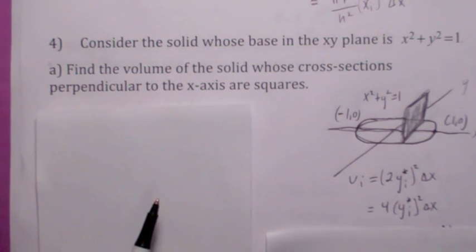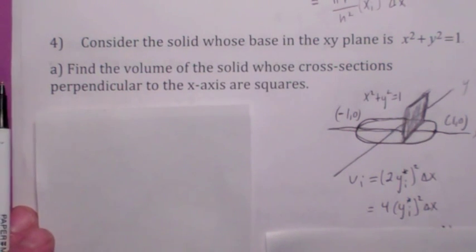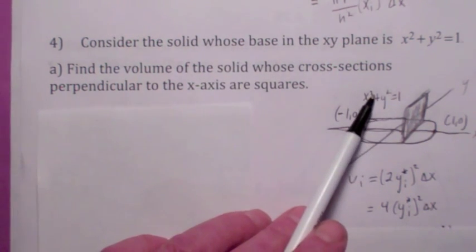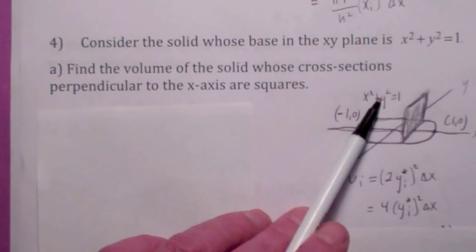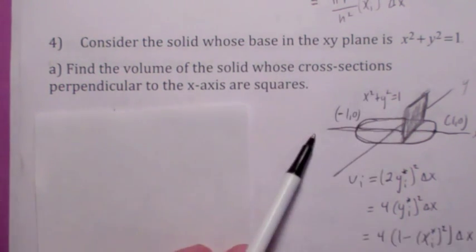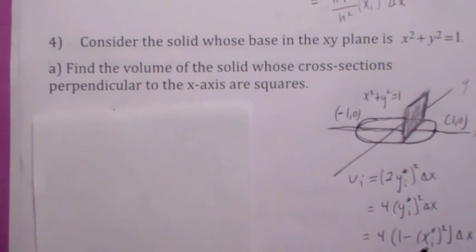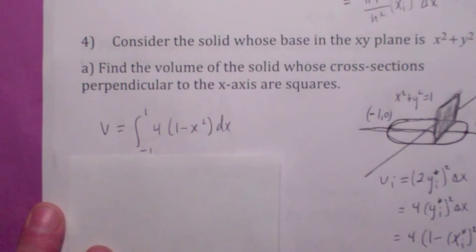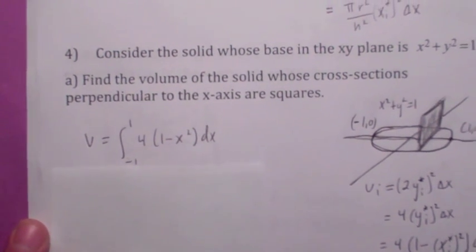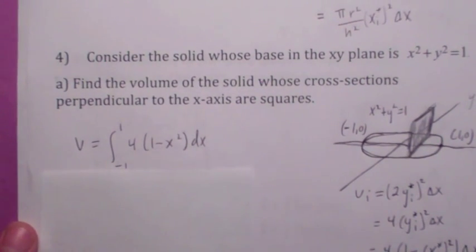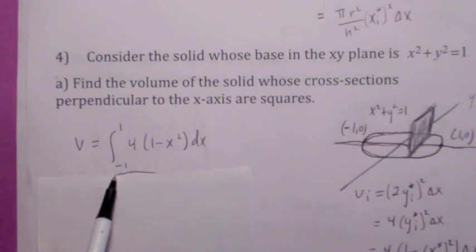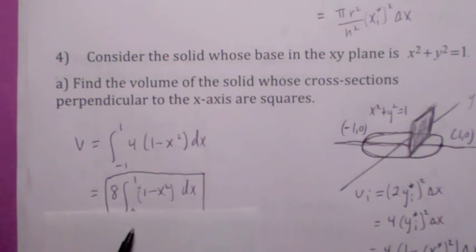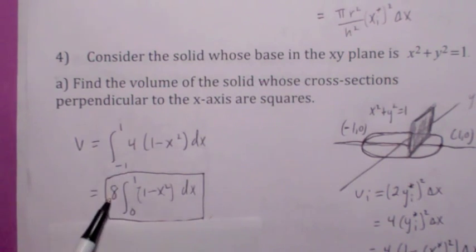Since we're adding these up along the x-axis, the thickness is Δx. It's a dx integration, so we want to express y in terms of x using the circle relationship. y_i*² equals 1 − x_i*², so the volume of each slab is 4(1 − x_i*²)Δx. Add them up, take the limit as n goes to infinity. This is symmetric — an even function over this interval — so you can do twice the integral from 0 to 1, giving you an 8 out front.